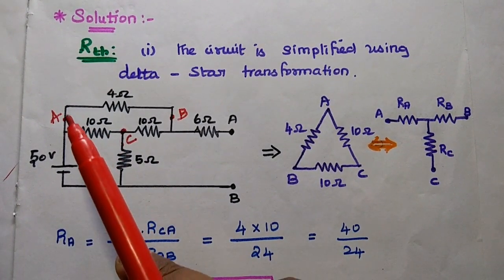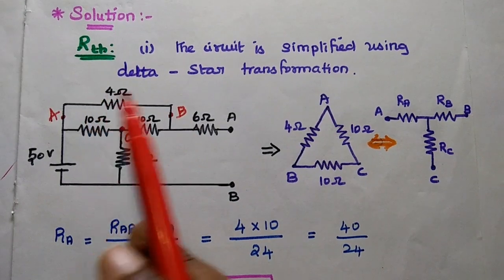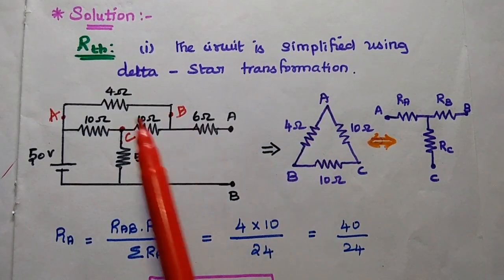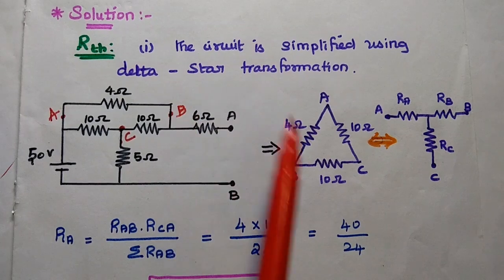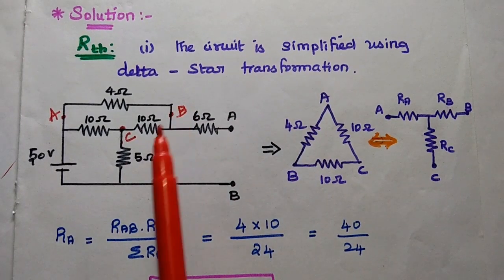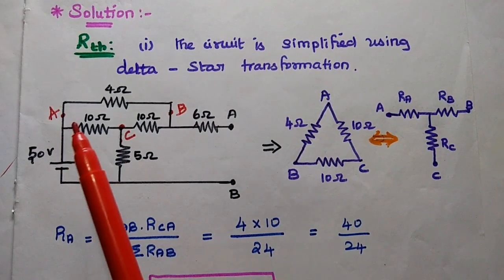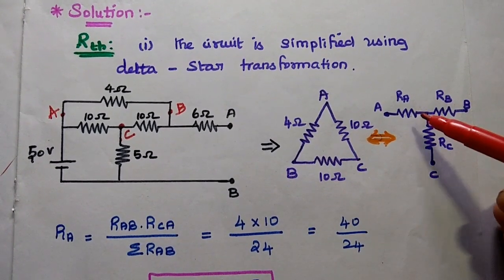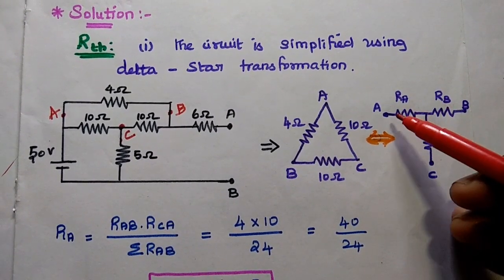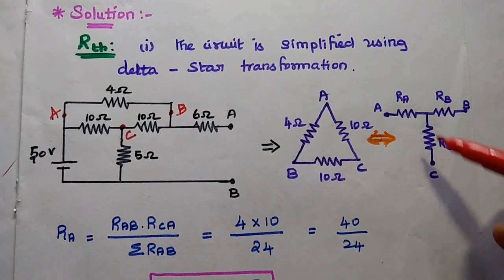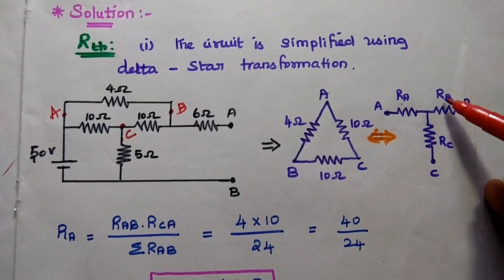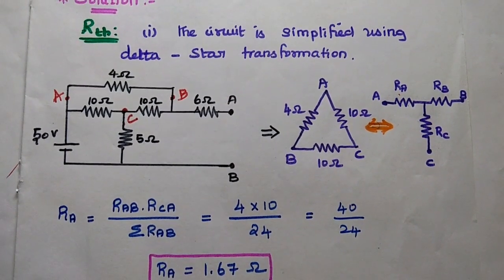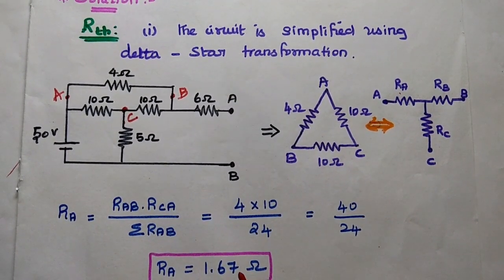Here we are going to take only this delta connection with nodes A, B, and C. AB is 4 ohm, BC is 10 ohm, and AC is 10 ohm. This can be converted into a star connection having nodes A, B, C with values RA, RB, RC. We can use the delta to star formula.